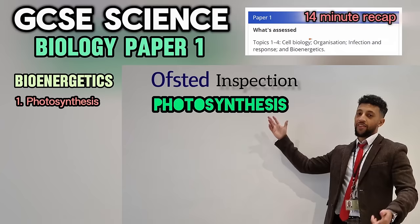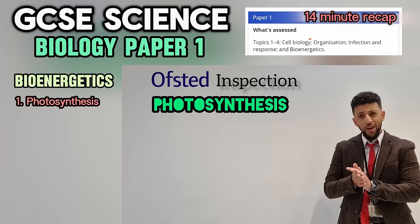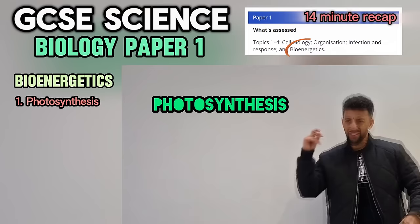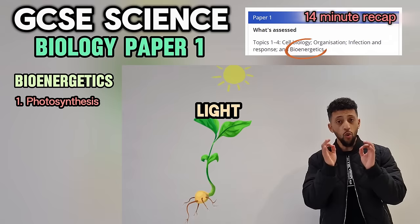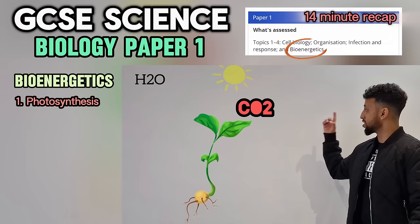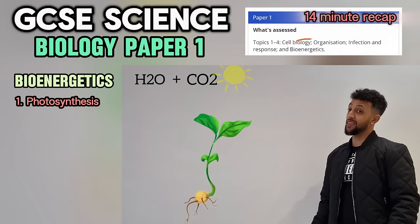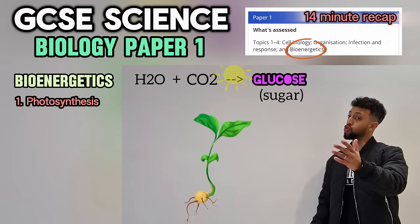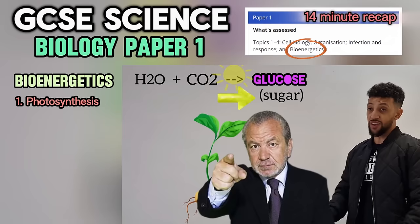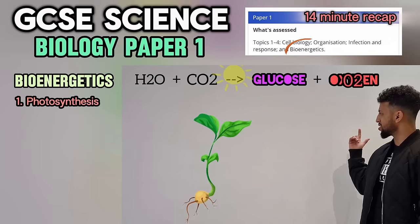Photosynthesis — we need sunlight, which enters the leaf. We also need H2O, which flows in, and carbon dioxide. Glucose is made — that's sugar. The equation: light energy plus water plus carbon dioxide produces glucose and oxygen.